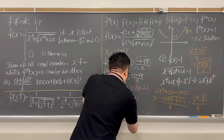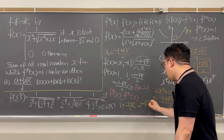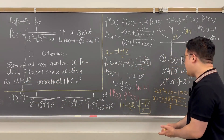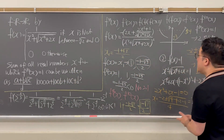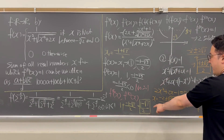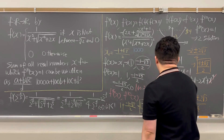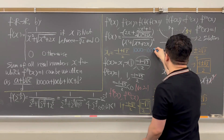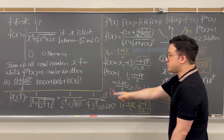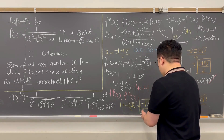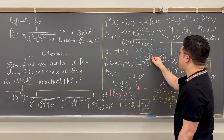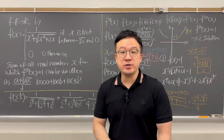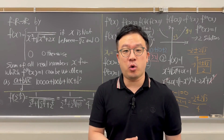The sum of all real x for which f₁₀(x) = 1 is 1 + (−1 − √3)/2 = 1 − √3/2, which is in the form (a + b√c)/d with a = 1, b = −1, c = 3, d = 2. So 1000a + 100b + 10c + d = 1000 − 100 + 30 + 2 = 932. The answer is 932.